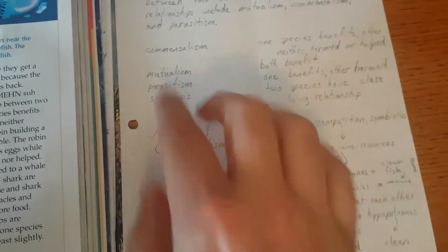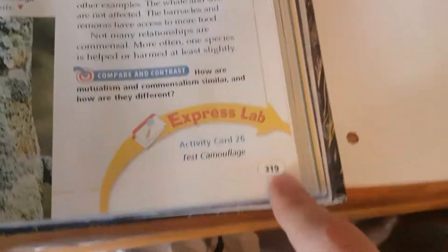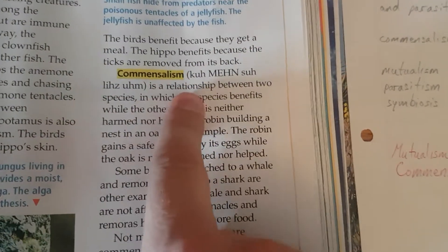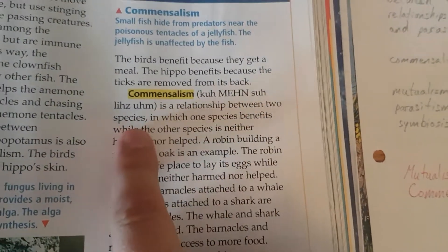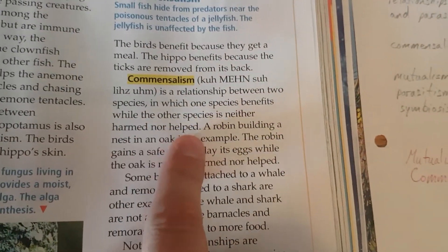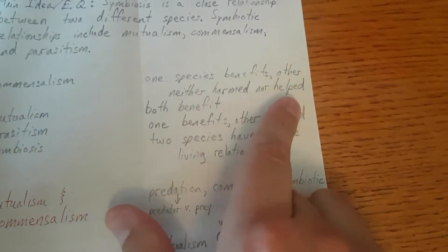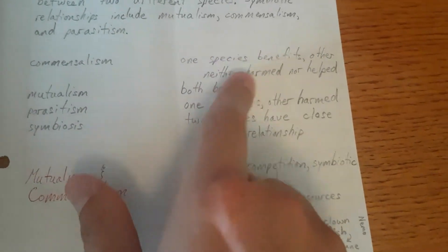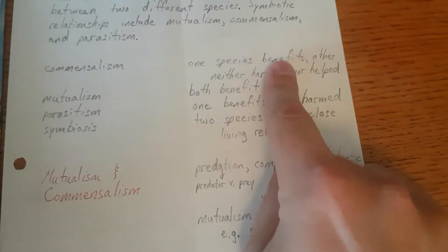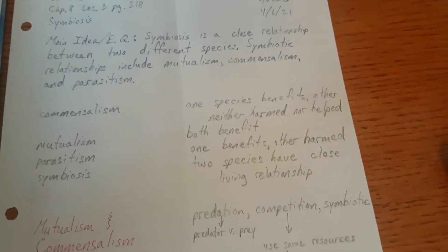Fold the paper in half. Vocabulary words. First one: Commensalism, page 319. Find the page, find the word. Commensalism is a relationship between two species in which one species benefits while the other species is neither harmed nor helped. Remember to indent so that you can see that both of those lines go with this one word. So in Commensalism, one species benefits and the other one doesn't get hurt or helped — it just kind of almost doesn't even notice that anything is there.